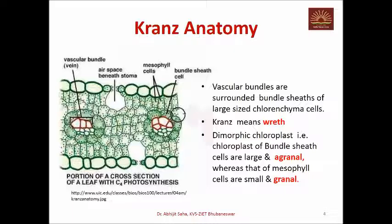In C4 plants, Kranz anatomy is a common feature — apart from the mesophyll cells, there are bundle sheath cells. One more important characteristic is that these plants have dimorphic chloroplasts. Dimorphic chloroplasts means the chloroplasts of bundle sheath cells are quite large and are agranal — they have no grana — while mesophyll cells also have chloroplasts but they are small and have grana. This combination of agranal chloroplasts in bundle sheath cells and granal chloroplasts in mesophyll cells is called dimorphic, or two types of chloroplasts.